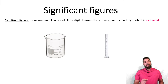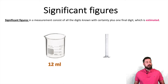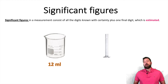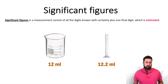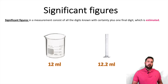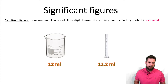If you take a look at the beaker and the graduated cylinder on your screen, there's a limit to how precise those pieces of equipment can make a measurement. For example, the beaker can make a measurement of 12 milliliters, while a graduated cylinder is more precise and can make a measurement of 12.2 milliliters. We're able to write what we know for certain, and then estimate the last digit.